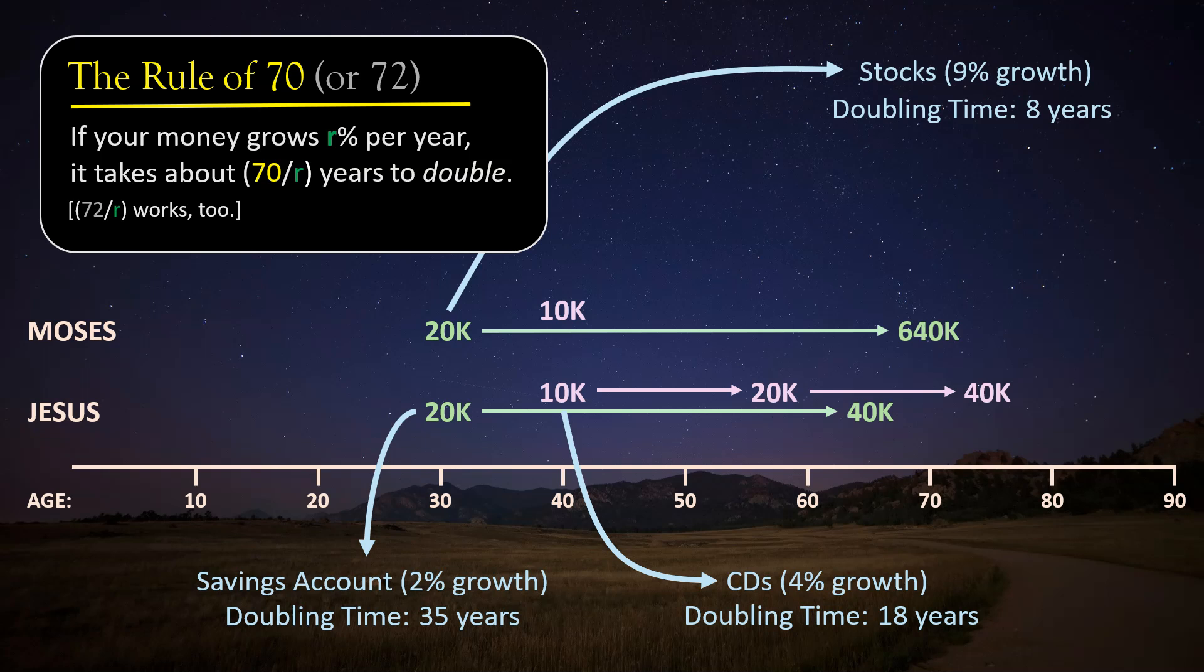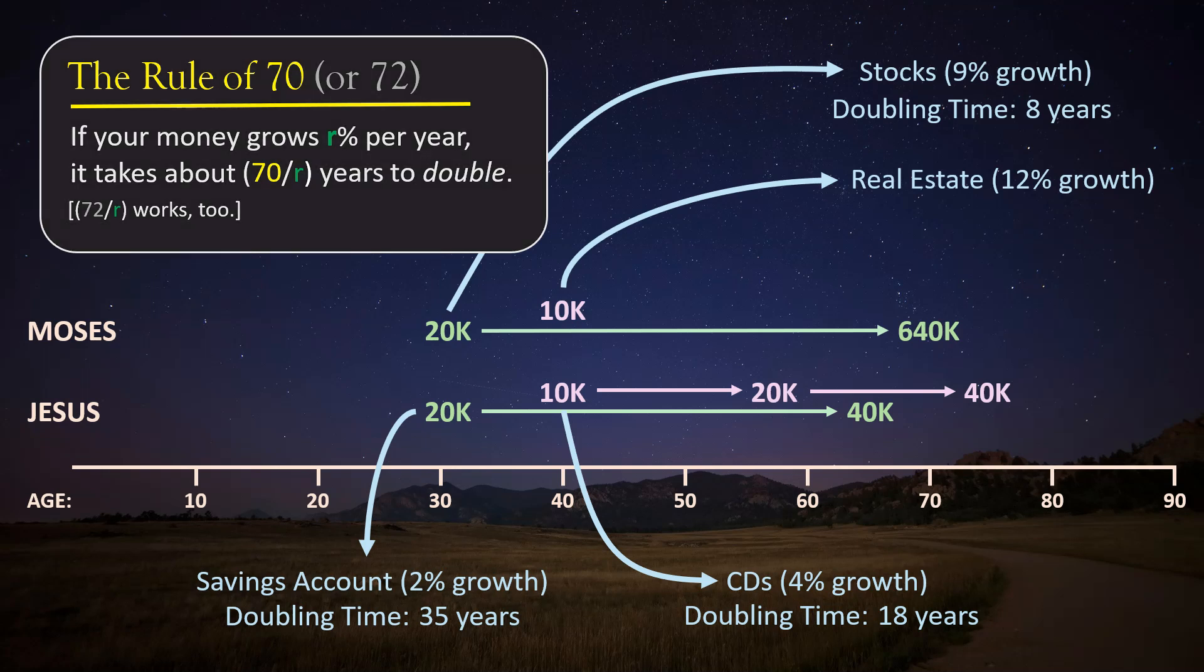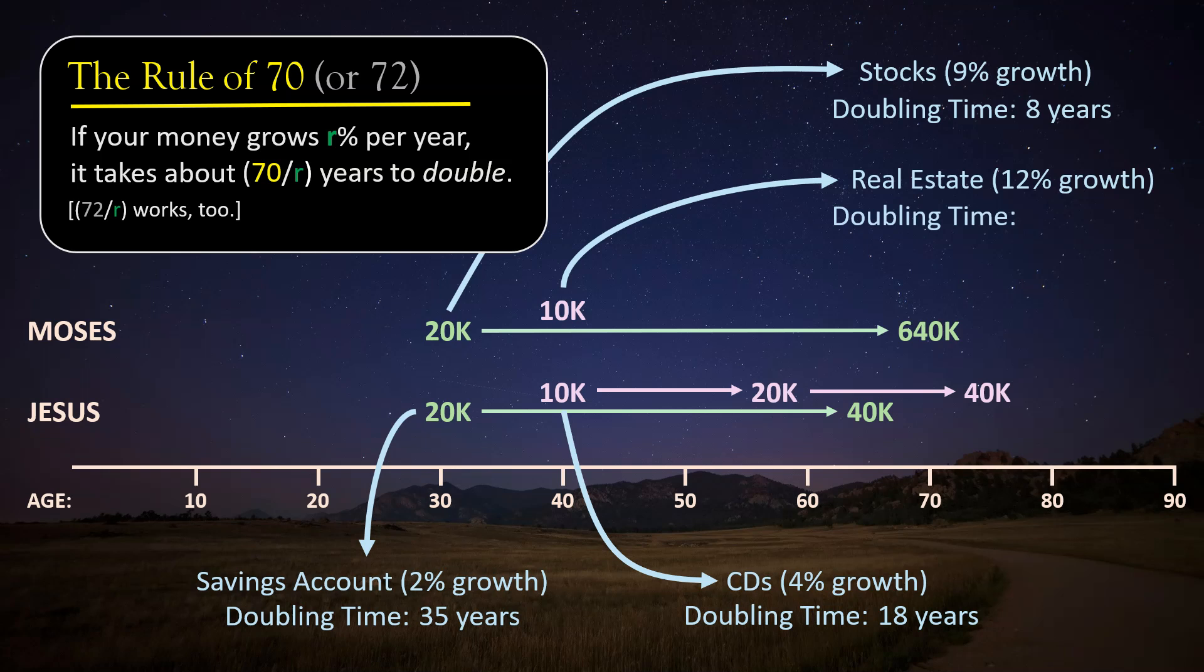But what about Moses? Well, Moses and some of his friends pooled some money, including Moses' 10,000, and invest in some real estate, where they do very well indeed, 12% growth per year. Of course, the rule tells us that his doubling time for this one will be about 72 over 12, which is a mere 6 years. This, of course, sets off a chain reaction of doublings, so that by the time Moses is 70, his initial outlay of 10,000 is now worth 320,000.